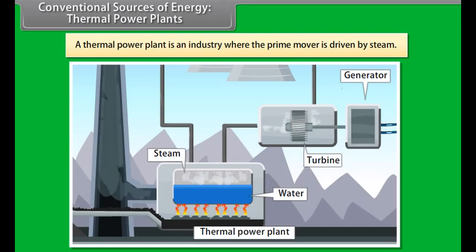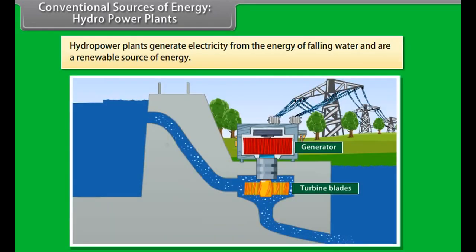A thermal power plant is an industry where energy is generated by steam. Water is heated and then turned into steam. This in turn spins a steam turbine driving an electrical generator. After it passes through the turbine, the steam is condensed in a condenser and recycled to where it was heated.